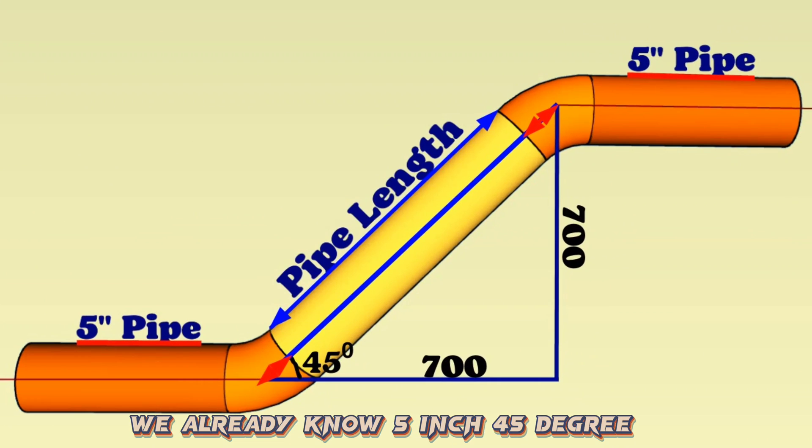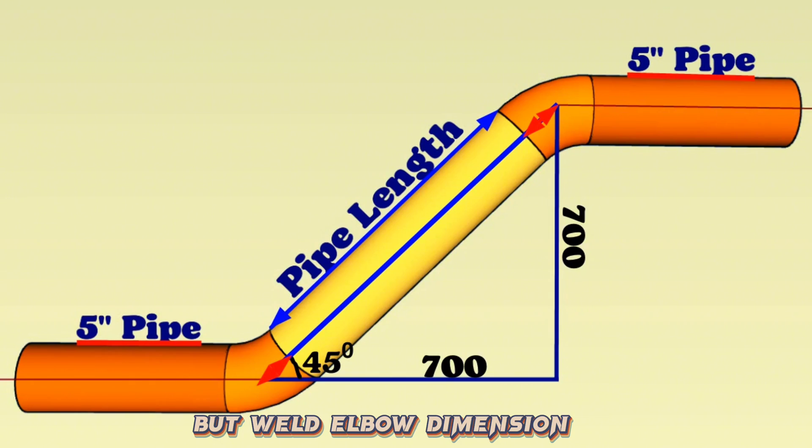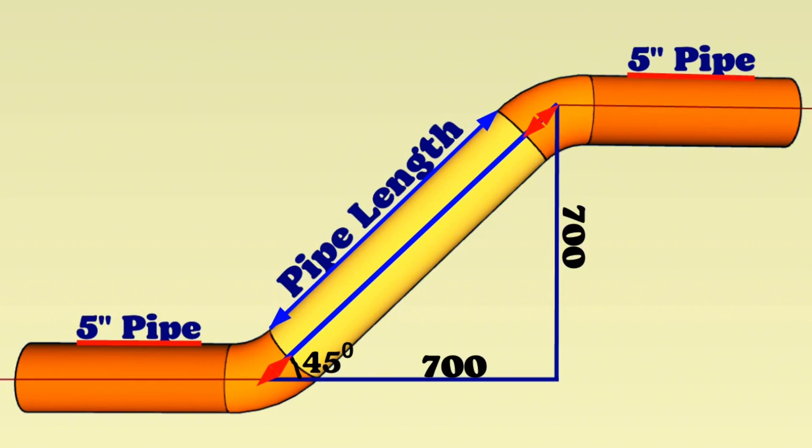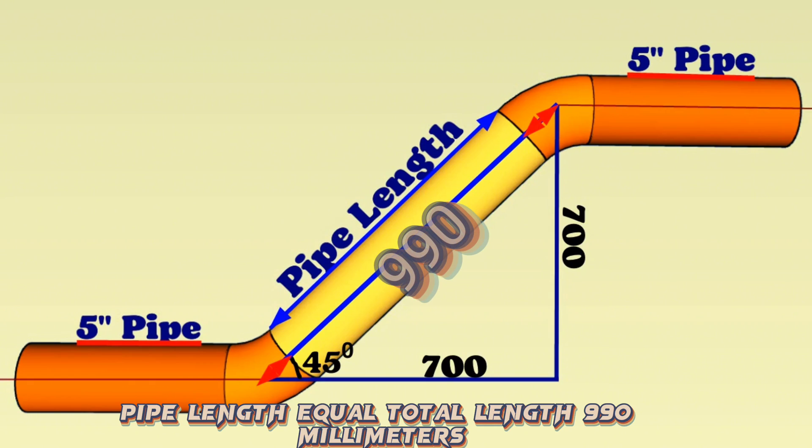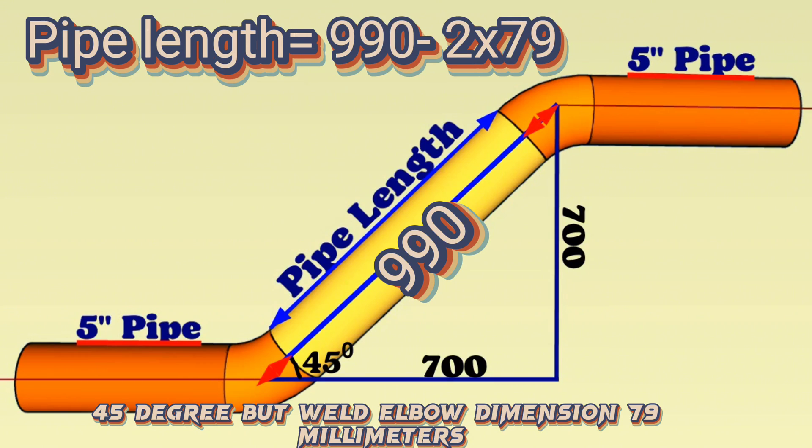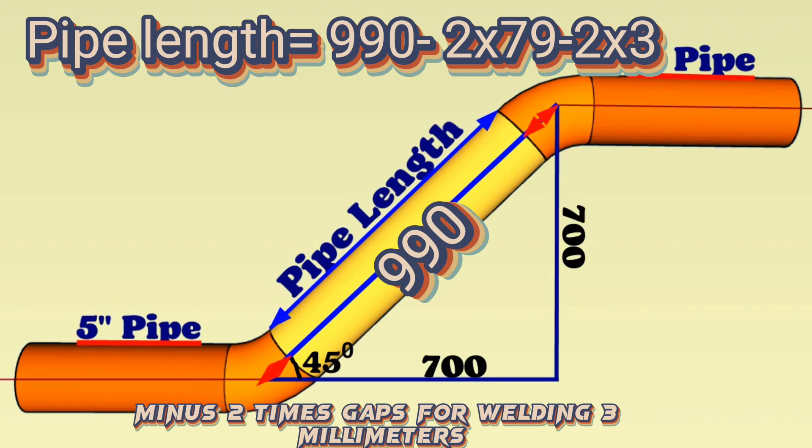We already know 5-inch 45-degree butt-weld elbow dimension and can start to find this yellow-colored pipe section. Pipe length equals total length 990 millimeters, minus 2 times 5-inch 45-degree butt-weld elbow dimension 79 millimeters, minus 2 times gaps for welding 3 millimeters.